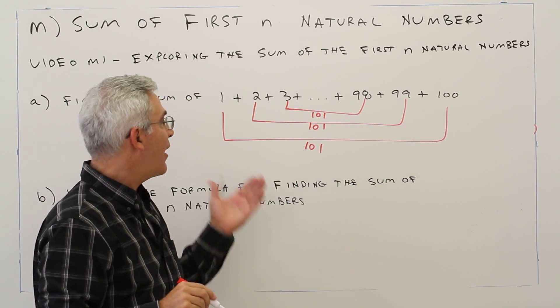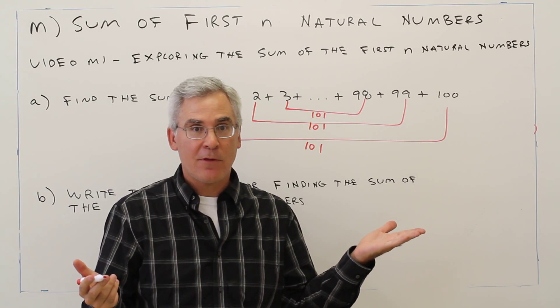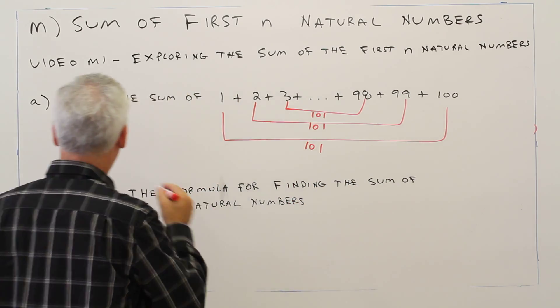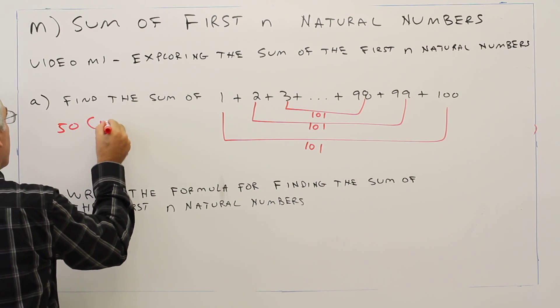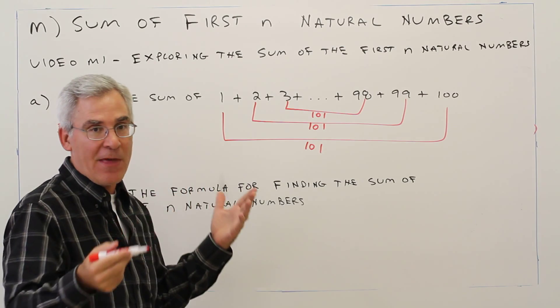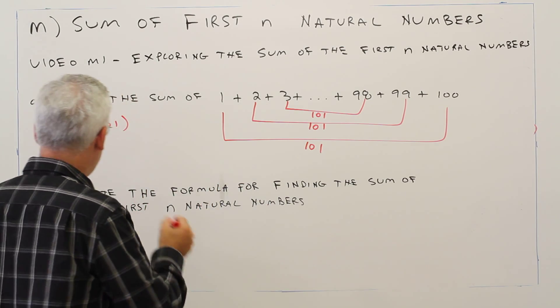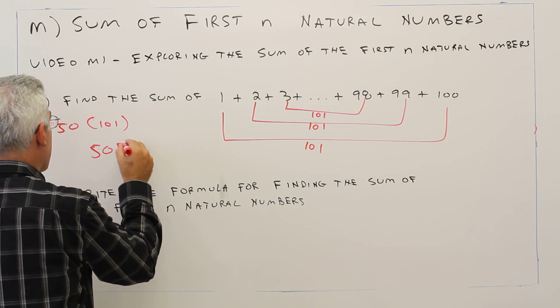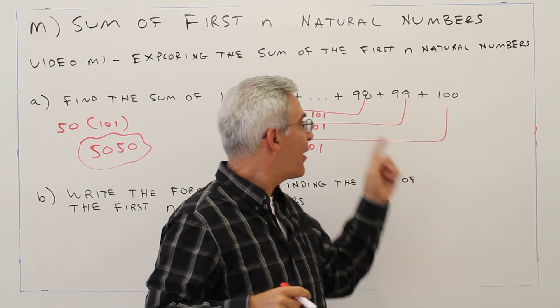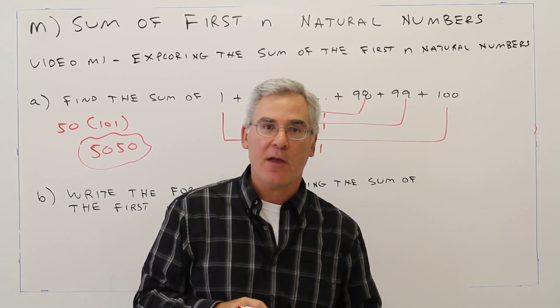And he said there's 50 pairs. So 50 times 101 is the answer. And 50 times 100 is 5,000. Add another 50, you get 5,050. So Gauss did all that within 10 seconds. Basically came up with that concept.